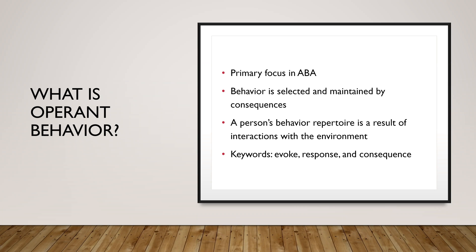Through that consequence, it's going to affect the antecedent. If a behavior is reinforced in the presence of an antecedent, that antecedent becomes an SD, or discriminative stimuli. The key words you want to know for operant behavior are evoke, response, and consequence. Don't get it confused with elicit and reflex, which are respondent terms. The key is evoke, response, consequence — our ABC contingency, our SRS contingency. Behavior is selected and maintained by consequences.